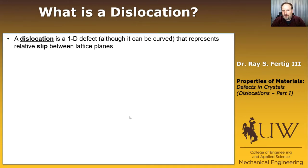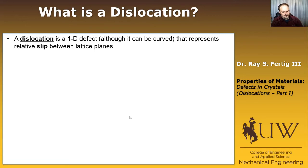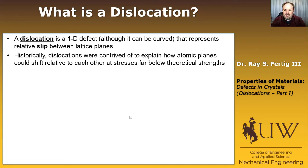A dislocation is formally a one-dimensional defect — think of it as a line, which can be curved or straight. It represents the relative slip between lattice planes. Sometimes it's referred to as a slip boundary: on one side of the dislocation the crystal has slipped; on the other side it hasn't. Historically, dislocations were conceived of before we could see them, to explain how atomic planes could shift relative to each other at stresses much lower than the theoretical strength.